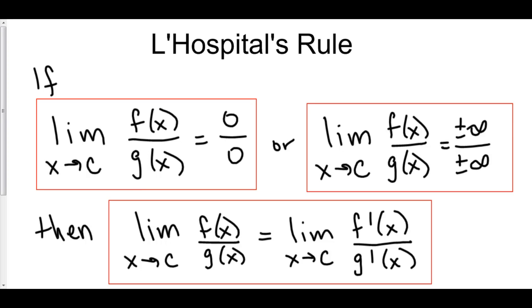L'Hopital's Rule is a way that we can evaluate limits using derivatives. Limits that we otherwise could not have done before, we can now do, now that we have an understanding of what the derivative actually is. L'Hopital's Rule says that if the limit as x approaches some number of f over g is either 0 over 0, or plus or minus infinity over plus or minus infinity, then the limit as x approaches c of f over g is equal to the limit as x approaches c of f prime over g prime.